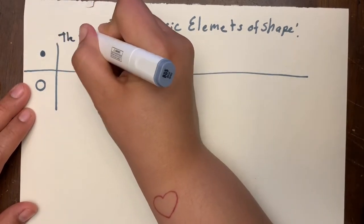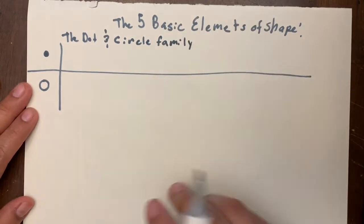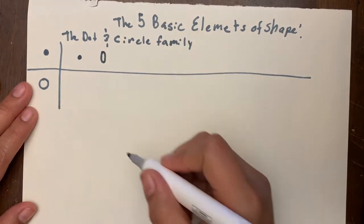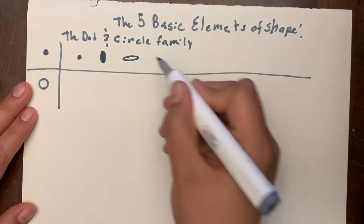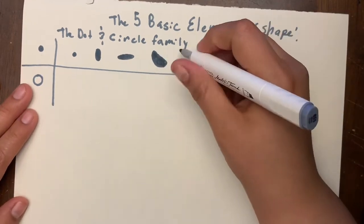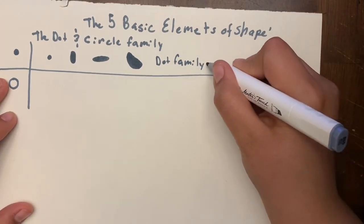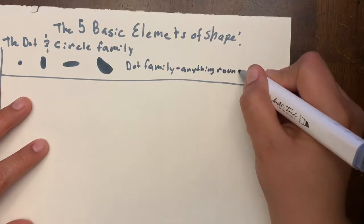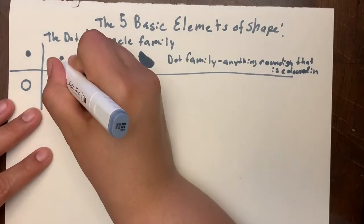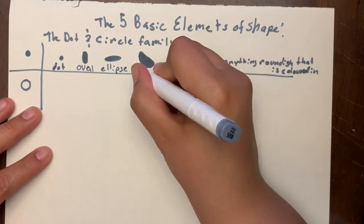This is the dot family. A dot is anything that can be filled in — that's my oval, a bigger dot, my ellipses (kind of like a dot on its side), and a little kidney bean shape. The dot family is anything roundish that can be filled in or colored in: my dot, my oval, the ellipses, and the kidney.